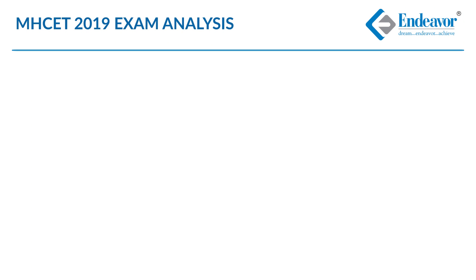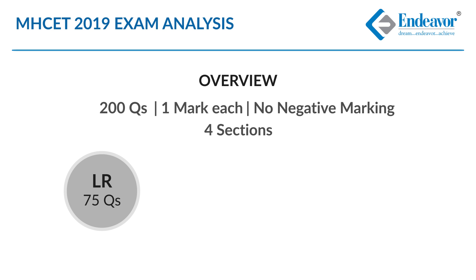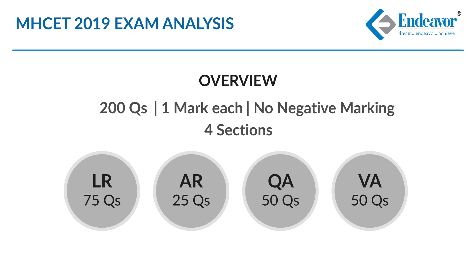Hello everyone, we are going to look at the analysis of MHCT 2019. To begin with the overview, there were 200 questions of one mark each with no negative marking, hence 200 marks in total. The paper is divided into 5 sections: logical reasoning with 75 questions, abstract reasoning with 25 questions, and quantitative aptitude and verbal ability with 50 questions each. The overall difficulty level of this paper can be judged by the in-depth analysis of every section.